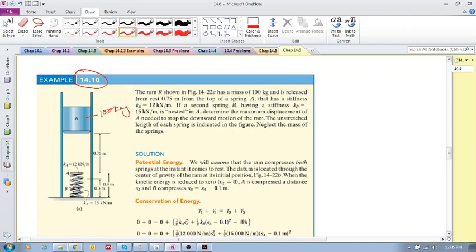Take note, you've got two springs. A has a spring stiffness of 12 kilonewton per meter, and B is nested inside. The height of A is 0.4 and the height of spring B is 0.3, so there's a difference in height of 100 millimeters or 0.1 meter.